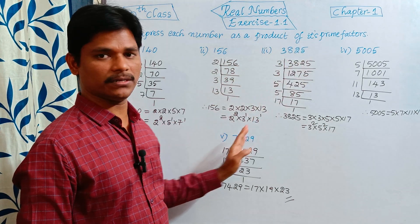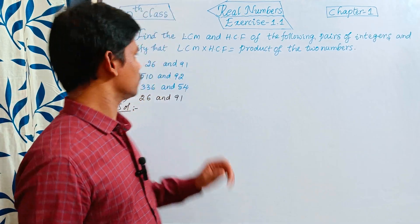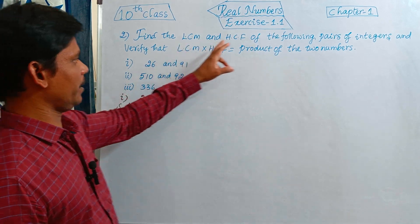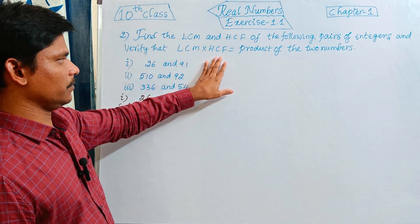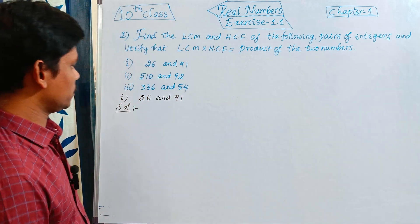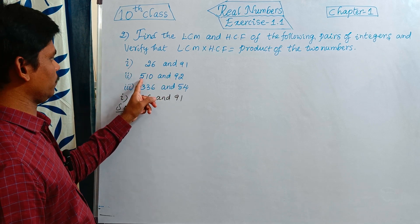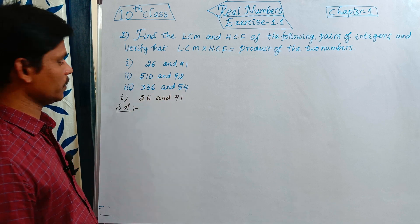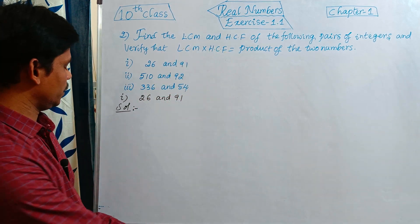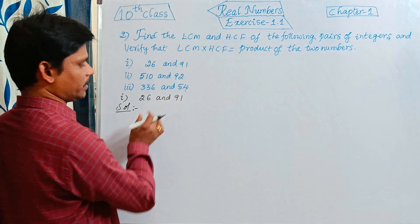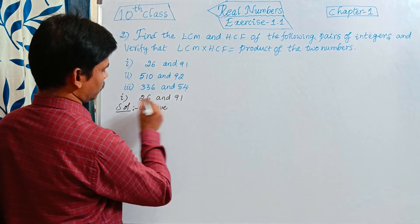This completes the first question — write each given number as the product of its prime factors. Now we move to the second question: find the LCM and HCF of the following pairs of integers, and verify that the product of LCM and HCF equals the product of the two numbers. There are three sub-questions: 26 & 91, 510 & 92, and 336 & 54. For the first pair, we write the prime factors of both numbers.